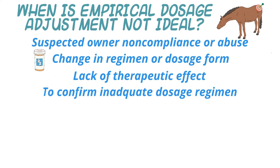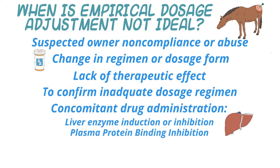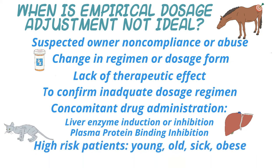Other scenarios where TDM is logical include drugs metabolized by the liver where hepatic metabolism may be enhanced or inhibited, or drugs for which plasma protein binding is inhibited by drug-drug interactions. We also need to consider that pediatric and geriatric patients, as well as animals with severe illness — particularly of drug-metabolizing organs or the heart — are going to be at risk. Ultimately, it is virtually impossible to confirm a diagnosis of drug toxicosis if we don't know that the drug concentration itself is elevated.